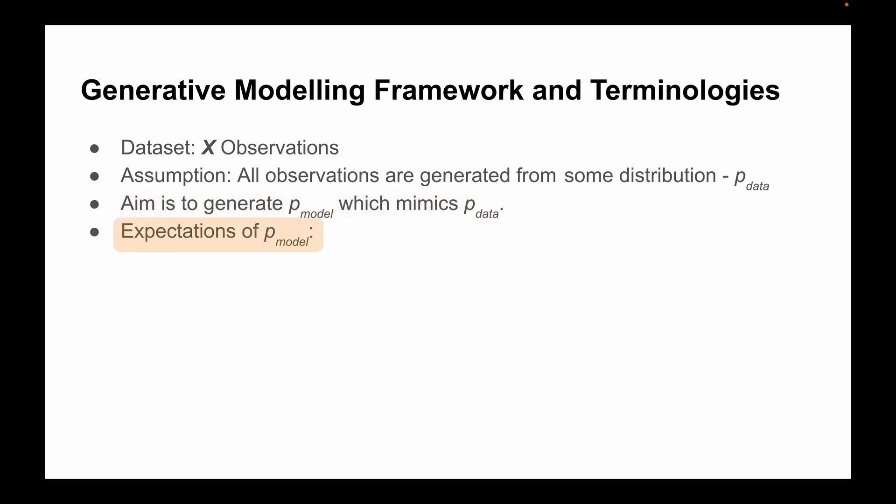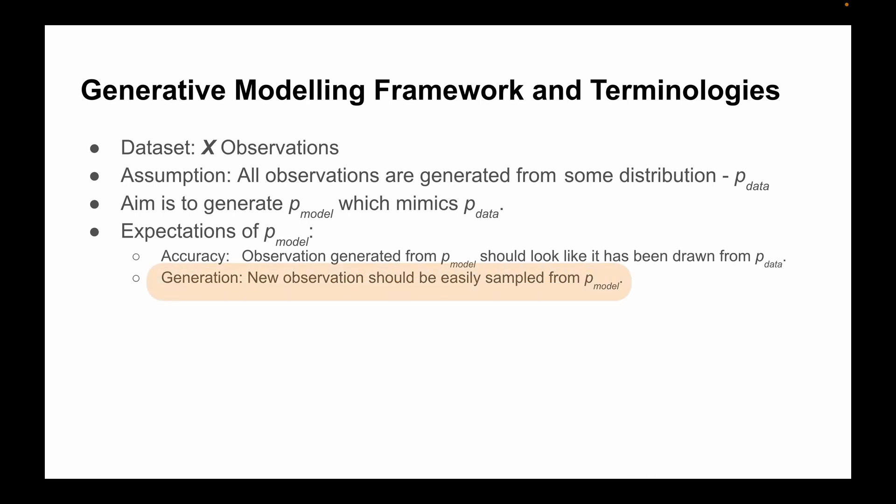So what do we expect exactly from this pmodel or this learned pmodel? The first expectation is accuracy. Observation which is generated from pmodel should look like it has been drawn from the input pdata. The second expectation is generation. New observation should be easily sampled from pmodel. The third expectation is representation. That is, the low-level features of the data should be easily understandable by the pmodel.